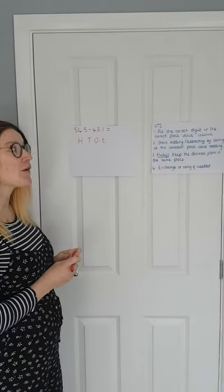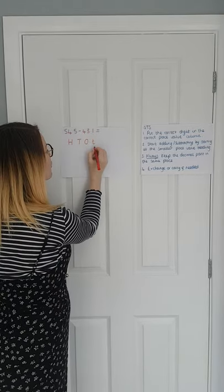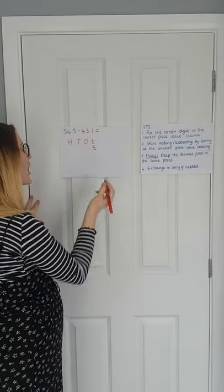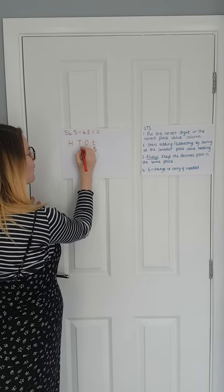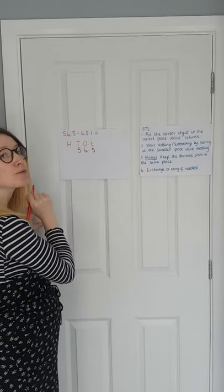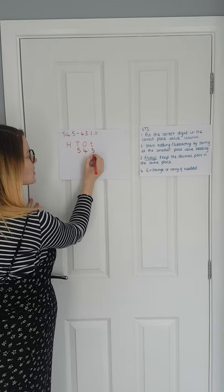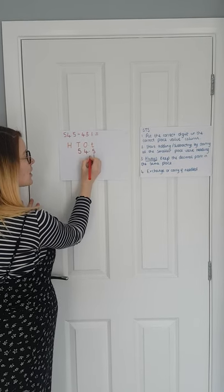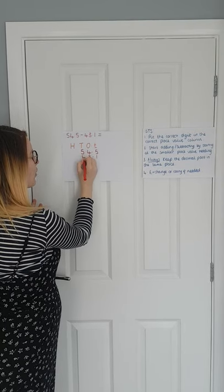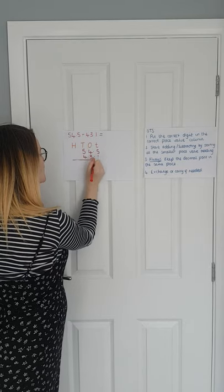Again, using our rules — put the correct digit in the correct place value column. So let's put our tenths in first: we've got five tenths here. Add your decimal place in, always remember to do that. Your four and then your 50, so 54.5. Now I need to subtract 43.1. We've got our tenths, which is one tenth. Add your decimal place in again. Three and then 40 — so 43.1.